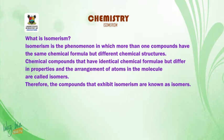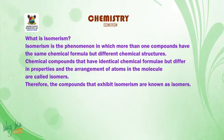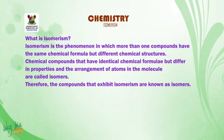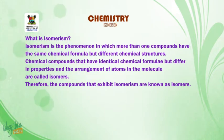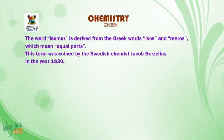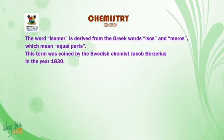Now, what is isomerism? Isomerism is a phenomenon in which more than one compound have the same chemical formula but different chemical structures. Chemical compounds that have the identical chemical formula but differ in properties and the arrangement of atoms in the molecules are called isomers. The word isomer is derived from the Greek words isos and meros, which means equal parts. This term was coined by the Swedish chemist Jacob Berzelius in the year 1813.